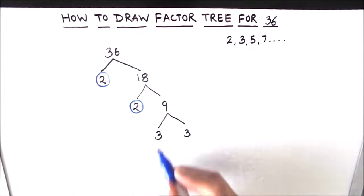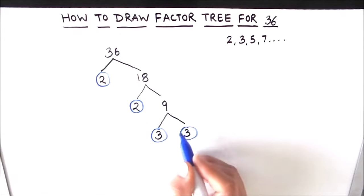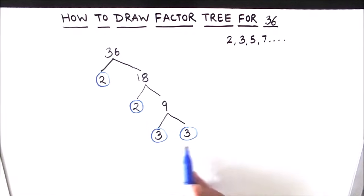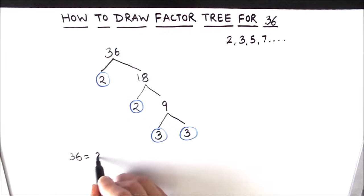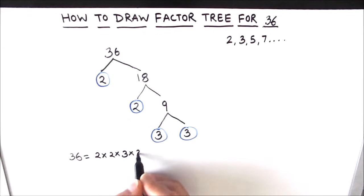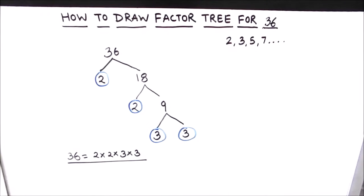The other factor of 9 is also 3, because 3 times 3 is 9. Both factors are prime, so we circle both of them. Since we have all prime numbers at the lower level, we stop here — the factor tree for number 36 is complete. The circled numbers are all prime factors: 2 times 2 times 3 times 3.